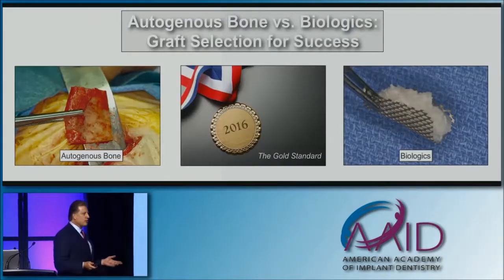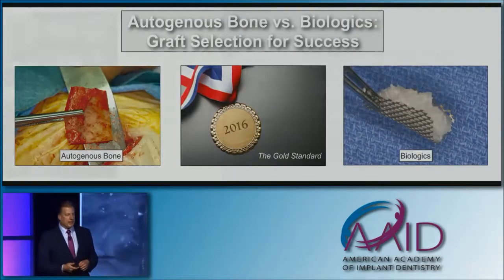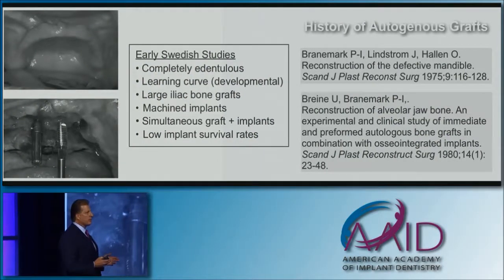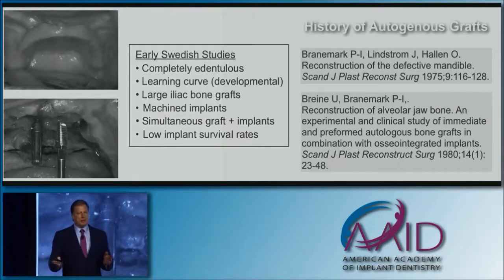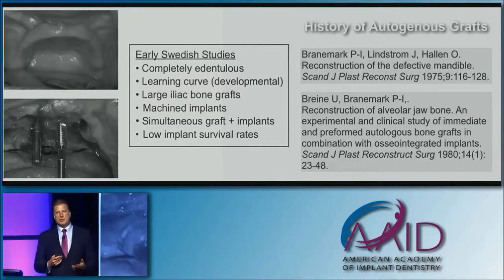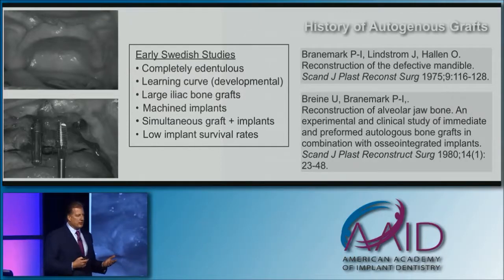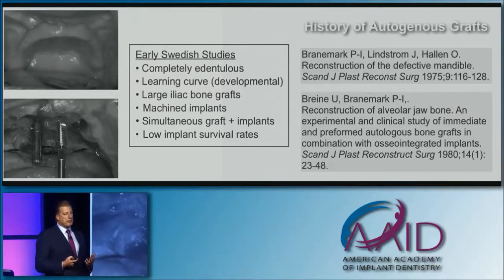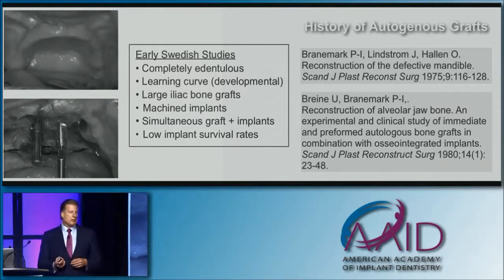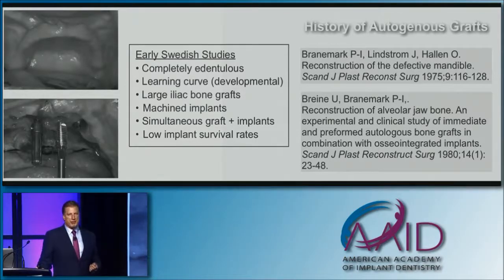So, is it autogenous bone or biologics that are really the gold standard today? Let's briefly talk about the history of autogenous bone. The first publications on using autogenous bone with integrated implants come from the Swedish, primarily managing the completely edentulous patient. They admitted there was a learning curve. Back in the infancy of implant dentistry, they used large grafts from the iliac crest, machined implants exclusively, and very often placed implants at the same time as the graft. When you look at survival rates, they were very low — many times lower than 80% with this technique.